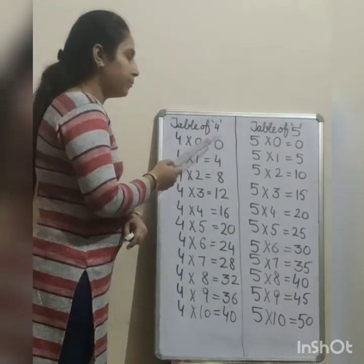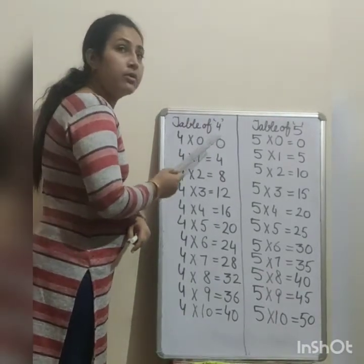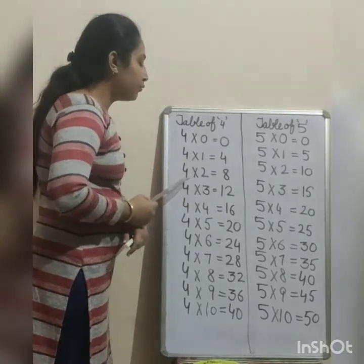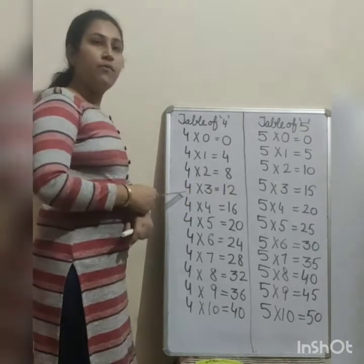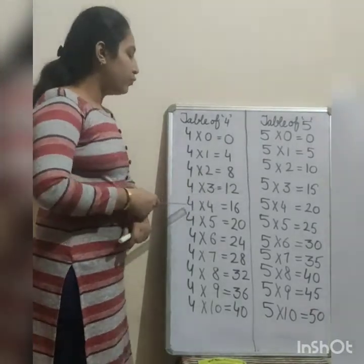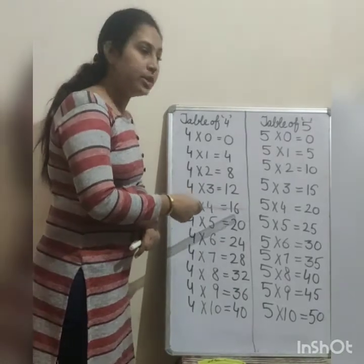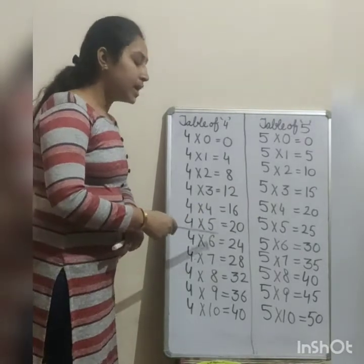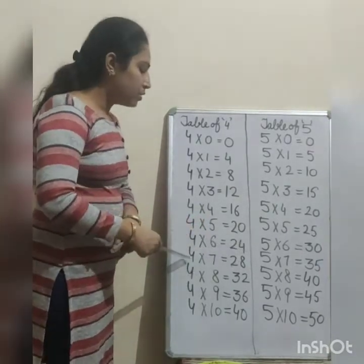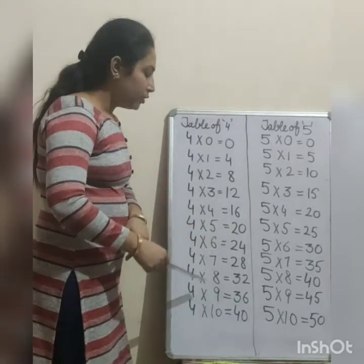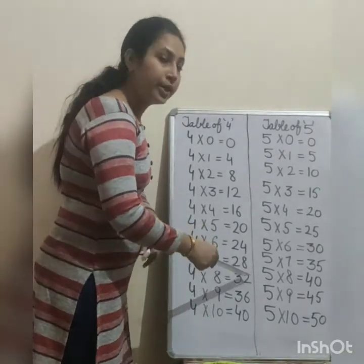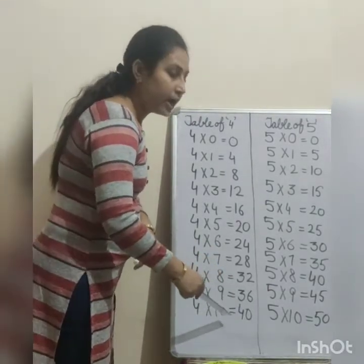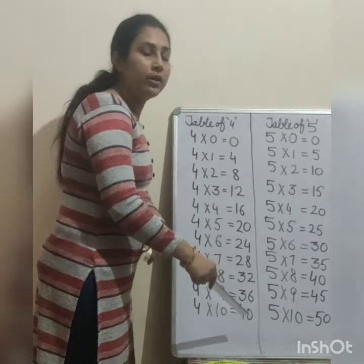Table of 4. 4 zeros are 0, 4 ones are 4, 4 twos are 8, 4 threes are 12, 4 fours are 16, 4 fives are 20, 4 sixes are 24, 4 sevens are 28, 4 eights are 32, 4 nines are 36, 4 tens are 40.